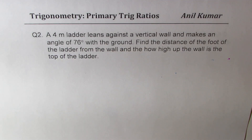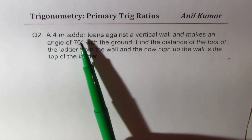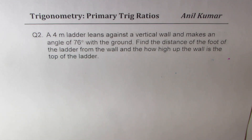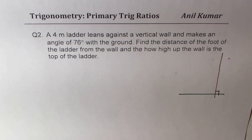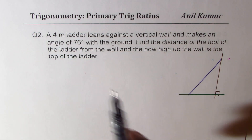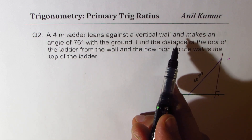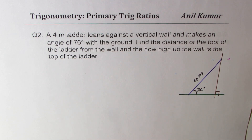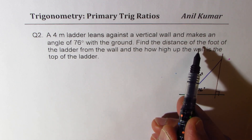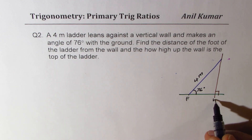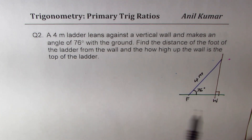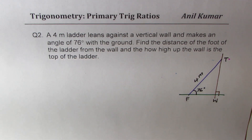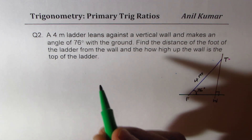Now question number two. We have a 4-meter ladder which leans against a vertical wall and makes an angle of 76 degrees. So that's the ground. This is a wall — we always assume the wall to be at right angles. The ladder leaning against it is 4 meters long. It makes an angle of 76 degrees with the ground. We need to find the distance of the foot of the ladder from the wall and how high up the wall the top of the ladder reaches. This forms our right triangle.